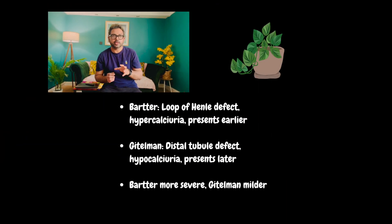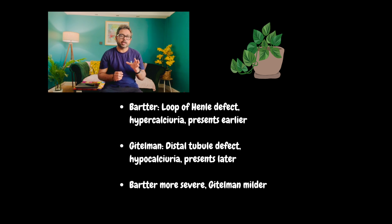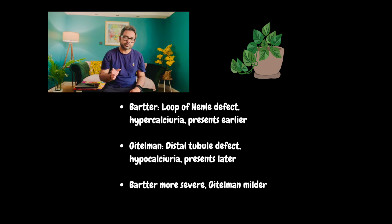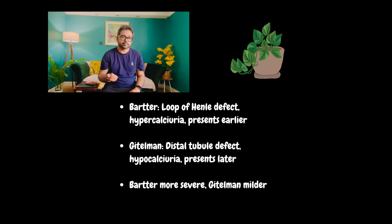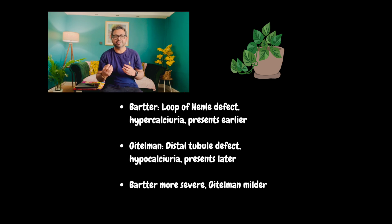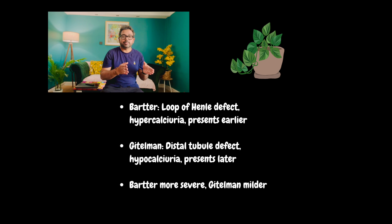Let's discuss Bartter versus Gitelman syndrome. Bartter syndrome mainly affects the loop of Henle, is associated with hypercalciuria, and presents earlier. Whereas in Gitelman syndrome, it affects the distal convoluted tubule, is associated with hypocalciuria, and presents later. Bartter is much more severe. Gitelman is much milder. You can remember: B stands for 'before,' so Bartter presents earlier or before.